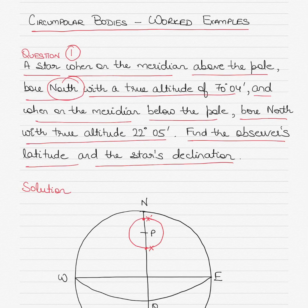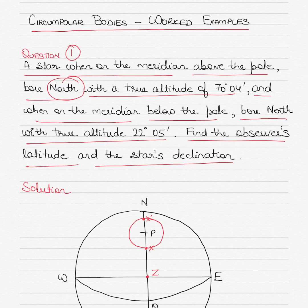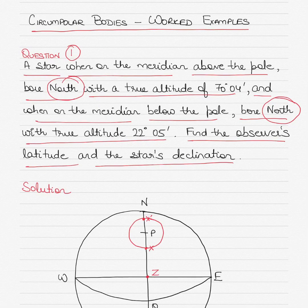The star is on the observer's meridian. When it is above the pole it was bearing north — north from you as an observer. You as the observer are at Z, the observer's zenith, which is your position on the earth projected onto the celestial sphere. This is the rational horizon diagram; Z is your position when projected onto the celestial sphere. The star was bearing north in both cases — when above the pole as well as when below the pole.